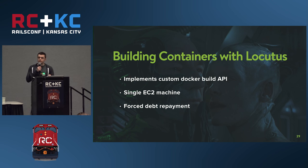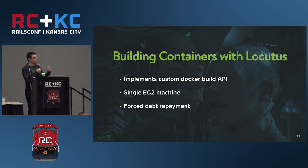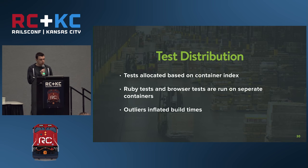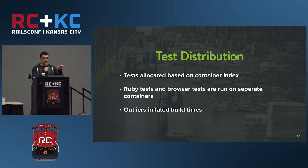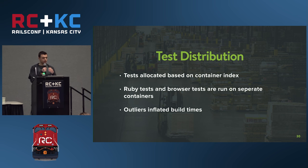Building containers for our CI system forced us to repay a lot of technical debt. Shopify is 10 years old, and we ran into really weird issues — like compiling assets requiring a MySQL connection. For test distribution, every container ran a set of tests plus an offset based on its index, with two categories: Ruby tests and browser tests. The problem was the Ruby test pool was much larger; Ruby tests would complete while browser tests took a couple more minutes, resulting in longer build times.